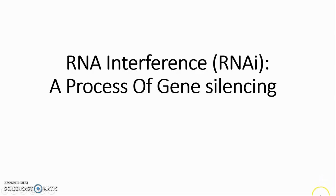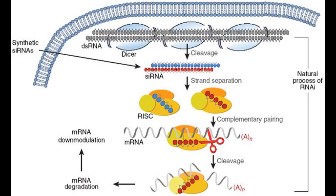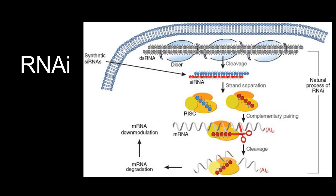RNA interference (RNAi) is a process of gene silencing — a sequence-specific mRNA degradation governed by smaller double-stranded RNA. It is a mediated process involving both exogenous and endogenous RNA degradation, the consequence of which is gene silencing — a suppression of gene expression.